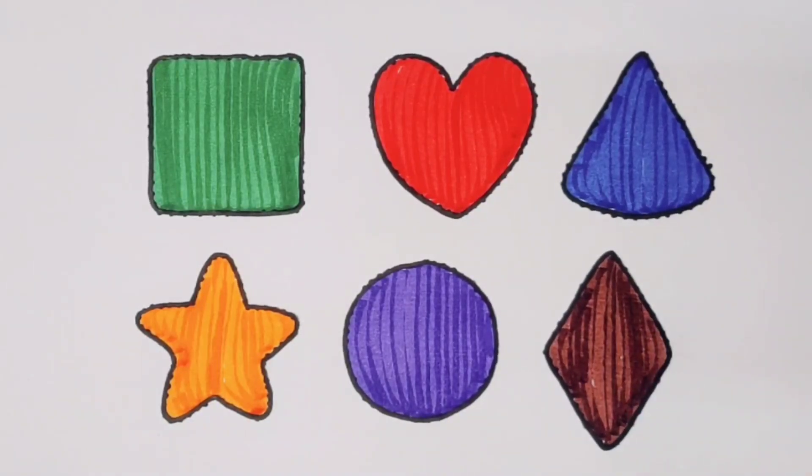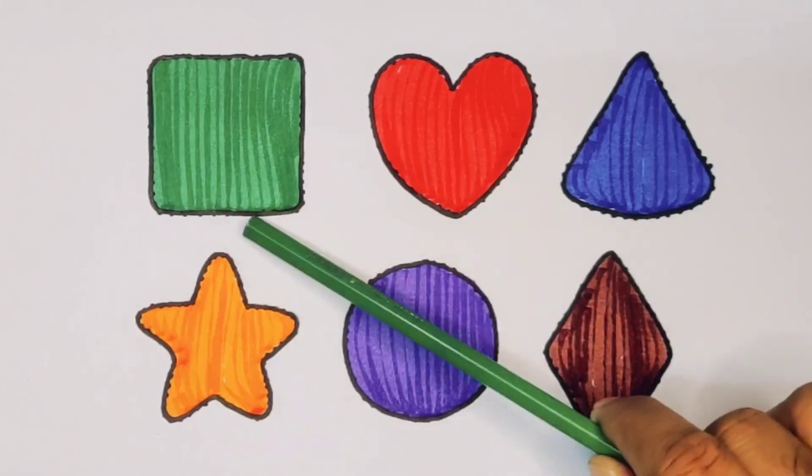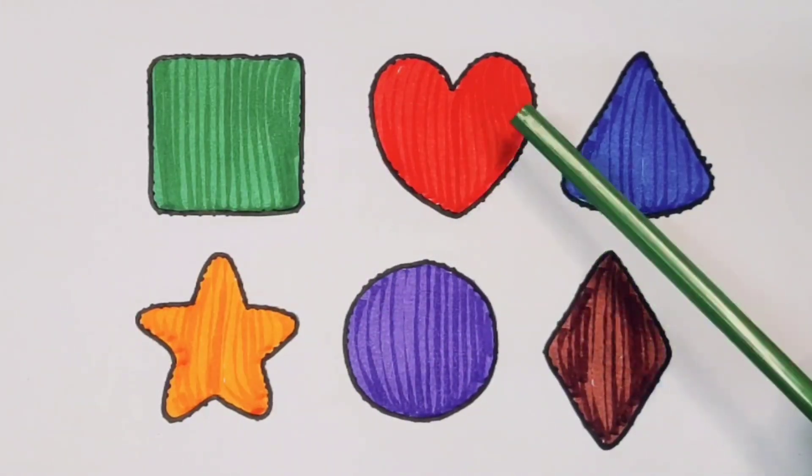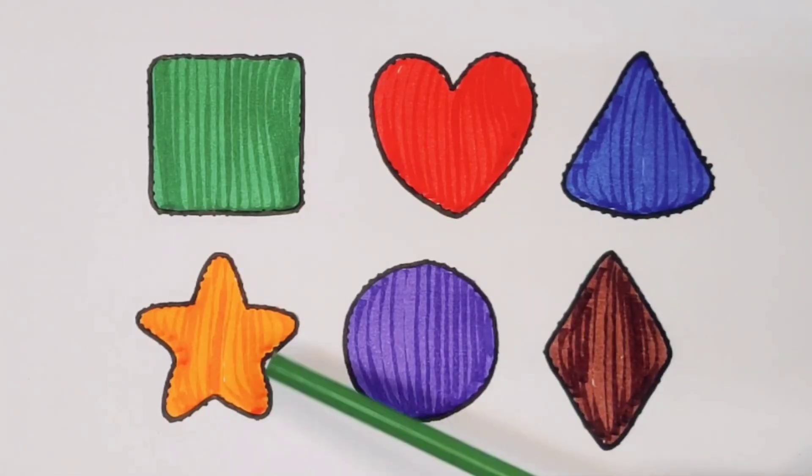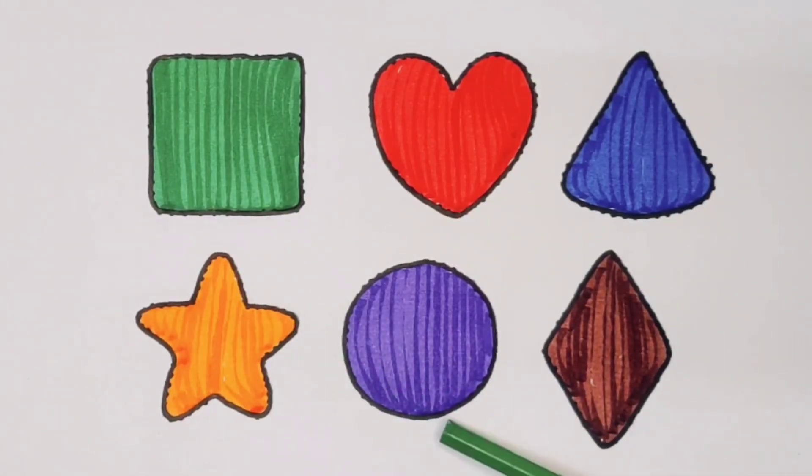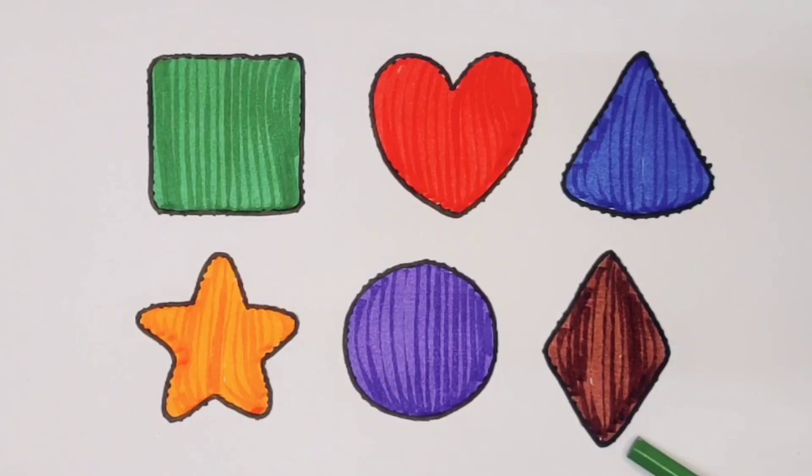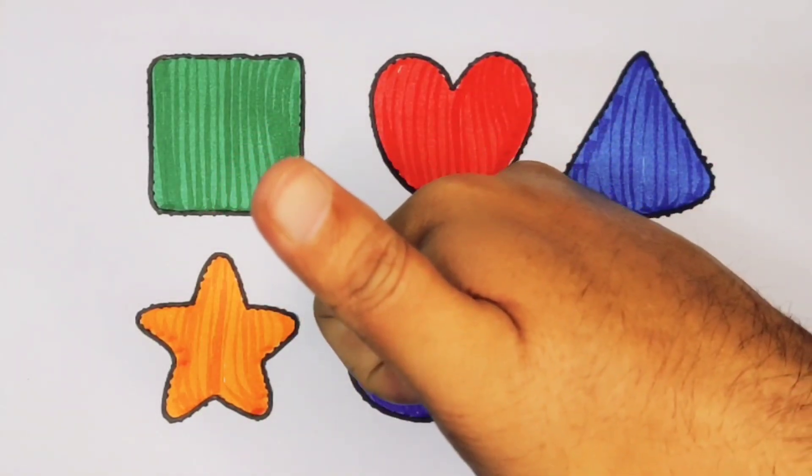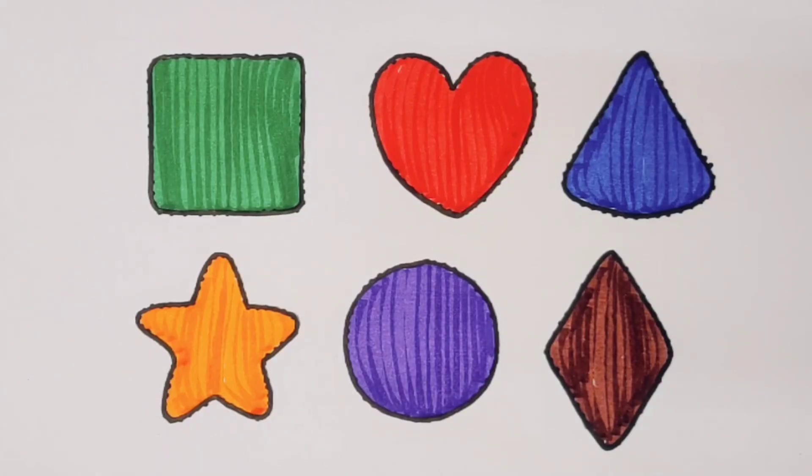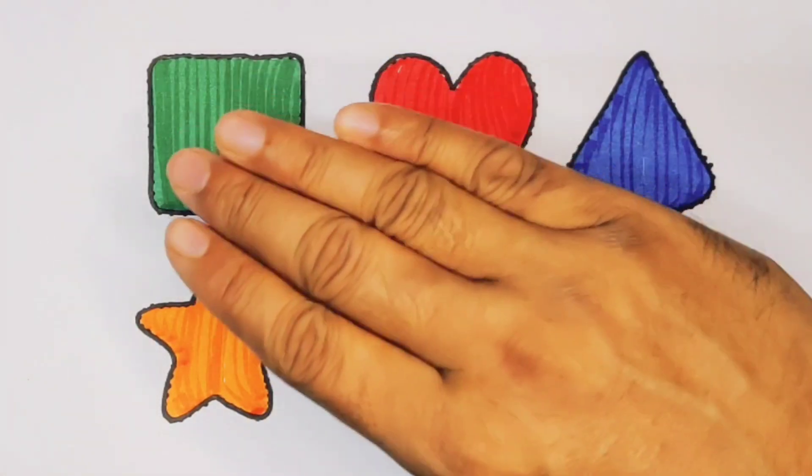What we learned? We learned green color square, red color heart, blue color triangle, orange color star, purple color circle, chocolate color rhombus. Thank you for watching my video. If you like it, please subscribe. Bye bye.